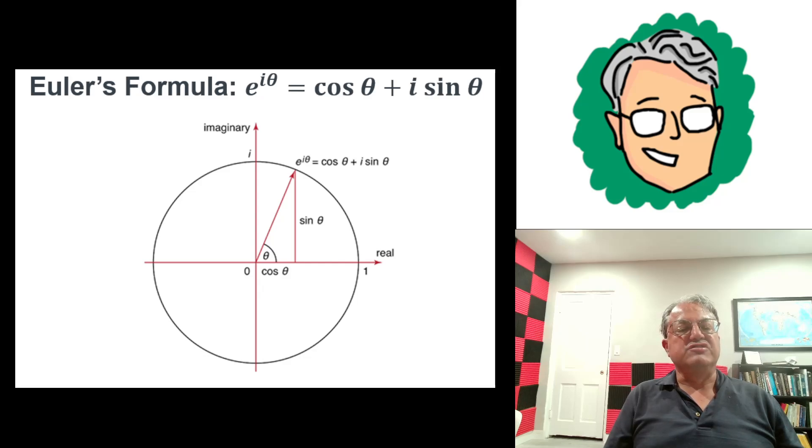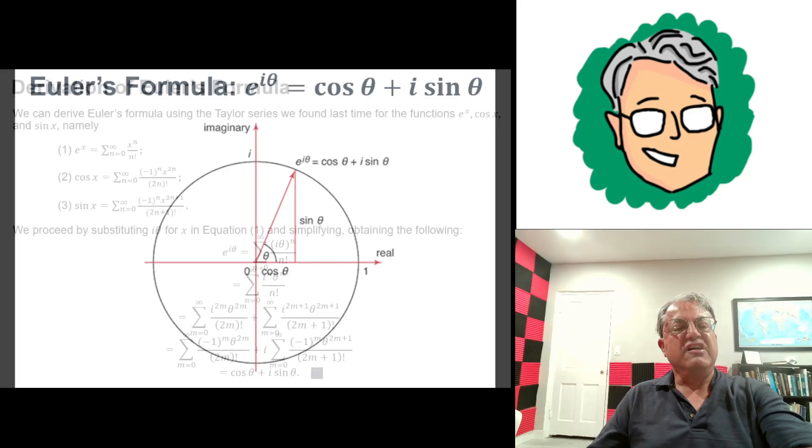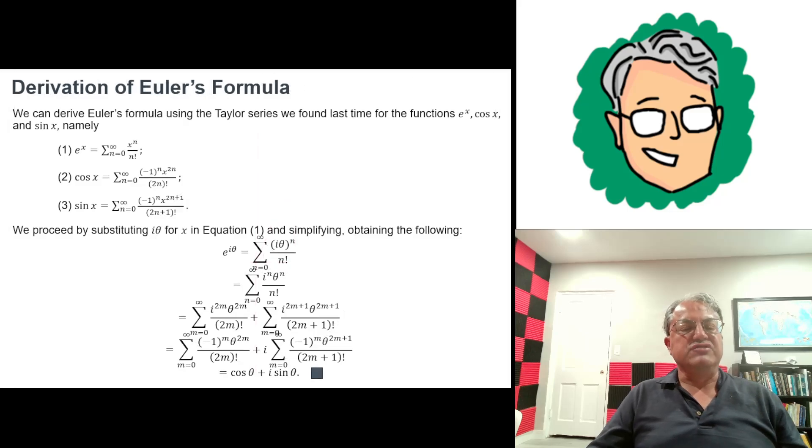You can think of E to the iθ as a vector in the xy plane with x component equal to cosine θ and y component equal to sine θ. We can also write this as cosine θ plus i sine θ, a vector of length one with angle θ with respect to the x axis. That's a geometric representation of Euler's formula.